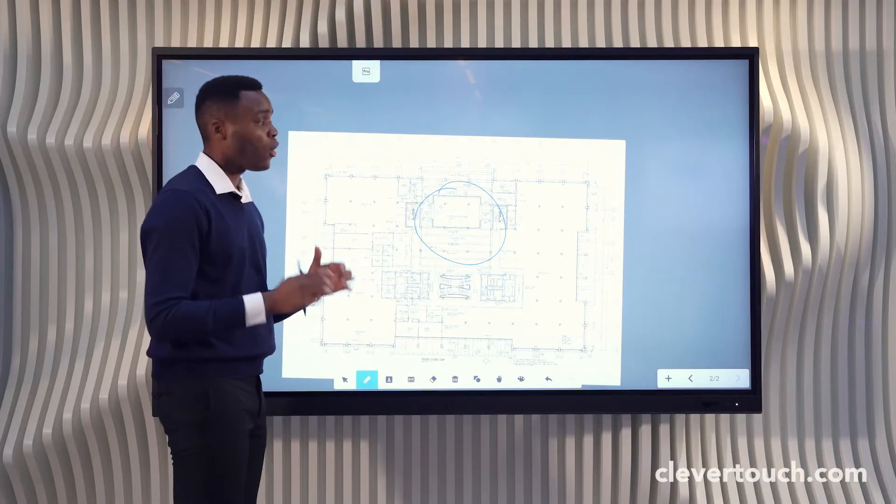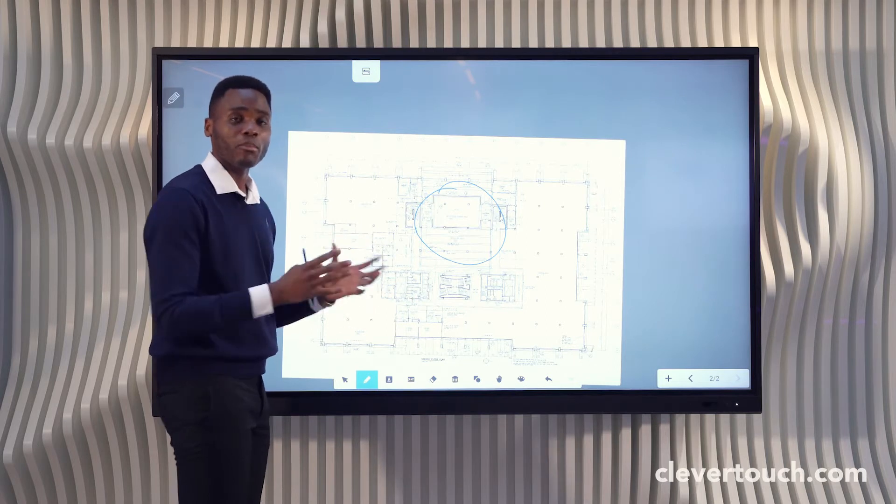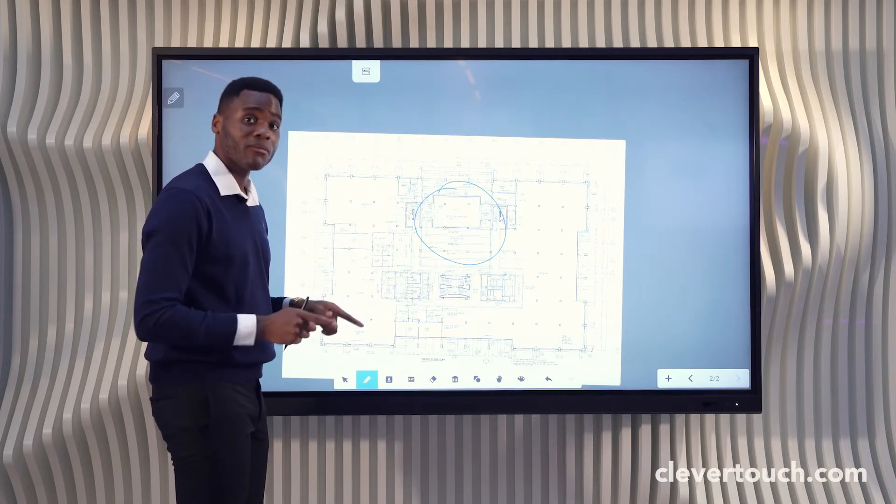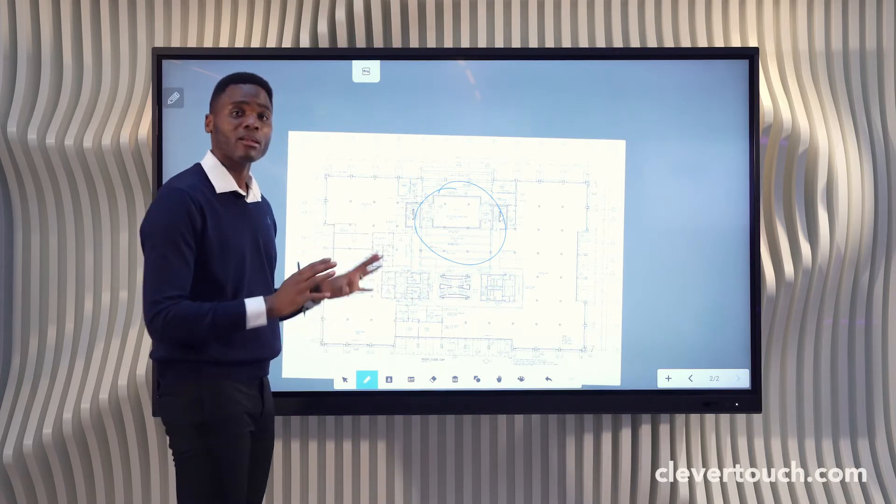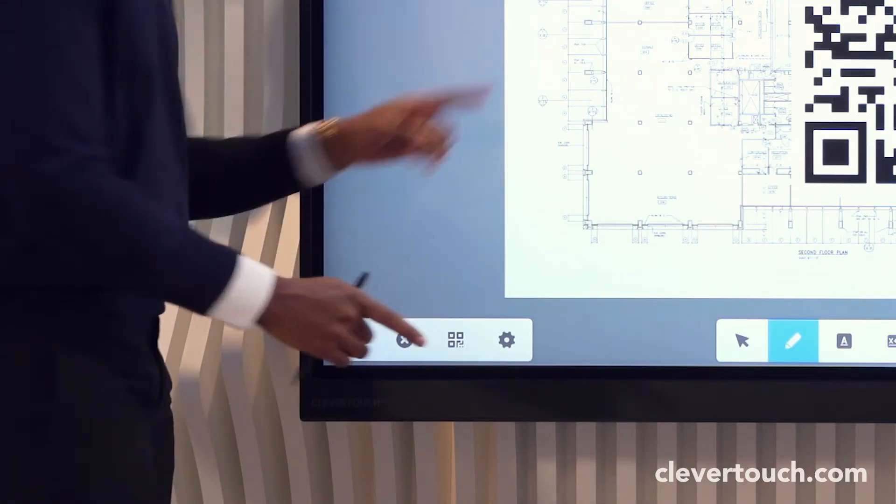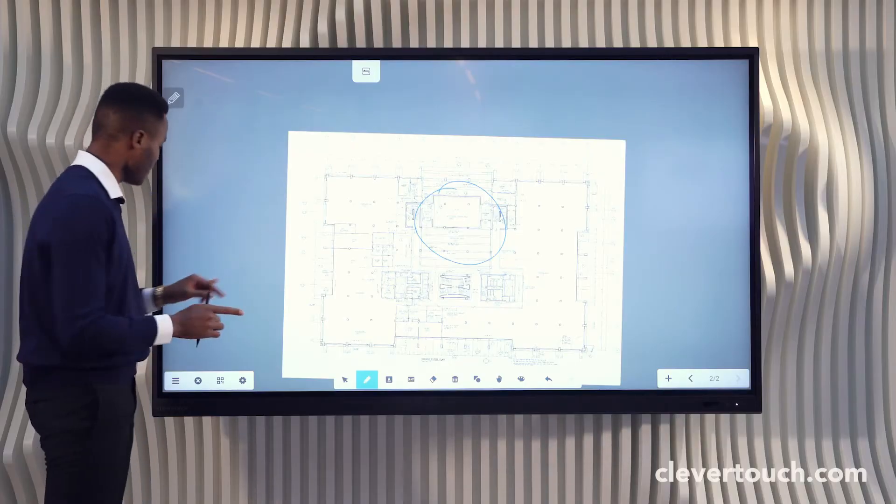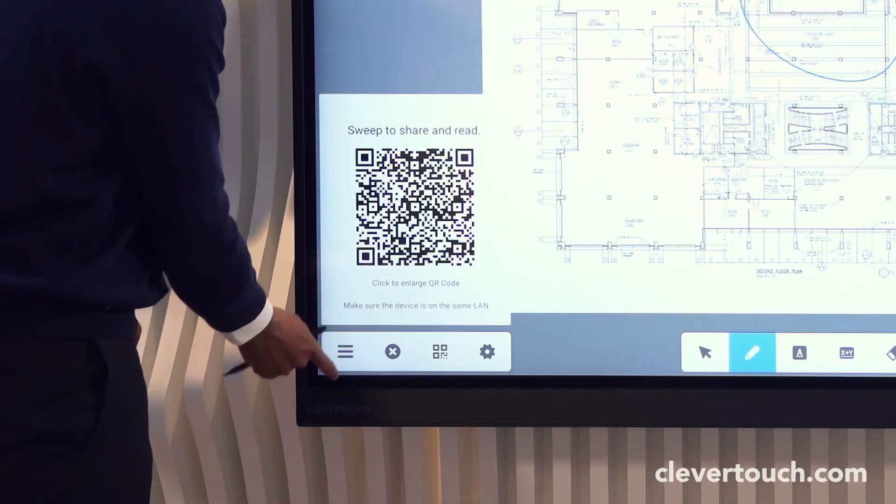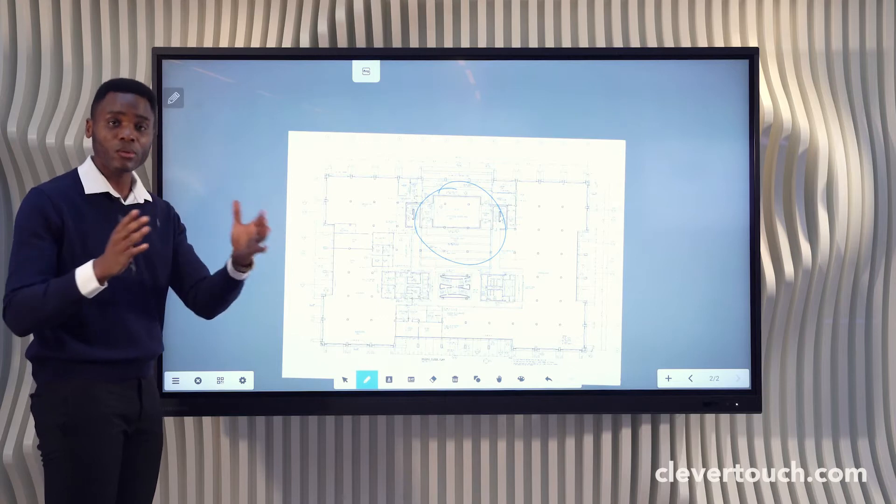And when they're done brainstorming and marking up, they can very simply create a QR code scannable by meeting participants or even better email their contents straight from the Clever Touch screen to their delegates.